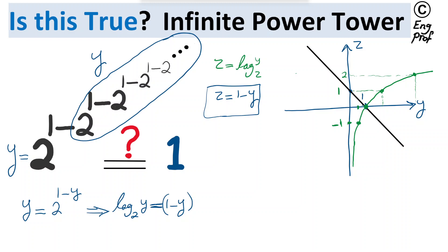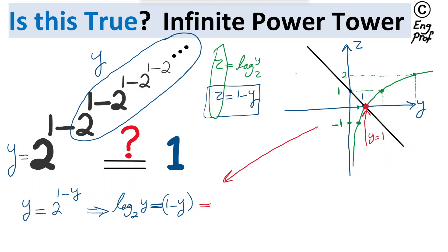You can see that the only way these two functions are equal to each other is at one point — when y is equal to 1. That's the only intersection. So based on the plot, the answer to this equation is y equals 1, which answers the question since we wanted to prove that y equals 1.